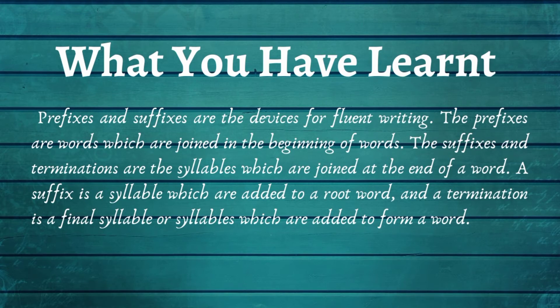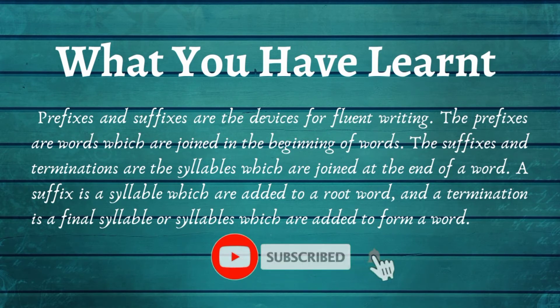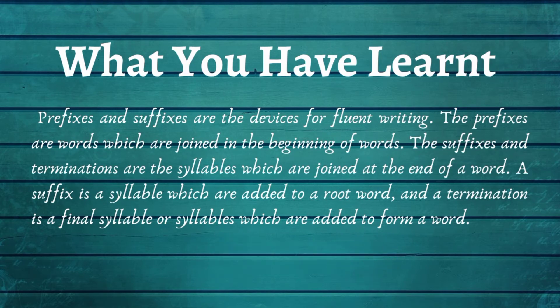The suffix and termination are the syllables which are joined at the end of a word. They are shorthand signs at the end of a word. The suffix is joined to a root word, and the termination is the final syllable which is added to form a word.